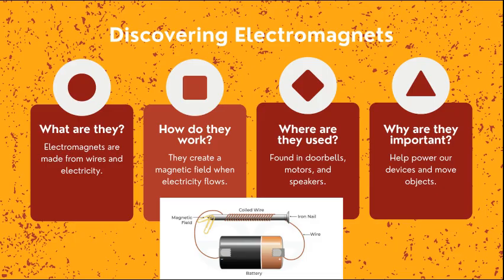This is an electromagnet. It's made of wires wrapped around metal and connected to a battery to allow electricity to flow and create a magnetic field. Electromagnets can be found in doorbells, motors, or speakers.